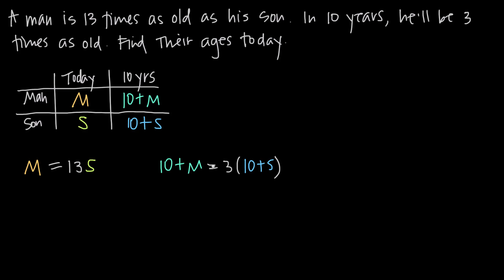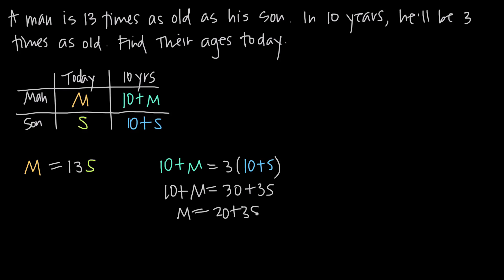This is now a systems of equations problem. We have two equations in two variables, and we can solve in multiple ways — for example, substituting 13s in for m. Let's first simplify the second equation by distributing the three across 10 + s to get 30 + 3s, so: 10 + m = 30 + 3s. Subtracting 10 from both sides gives us m = 20 + 3s.